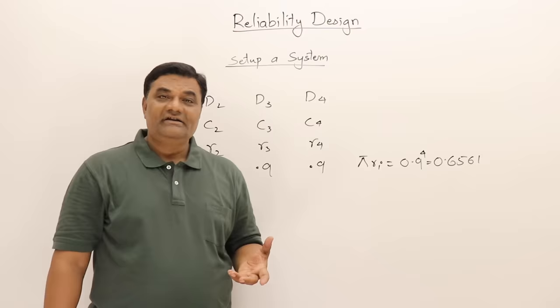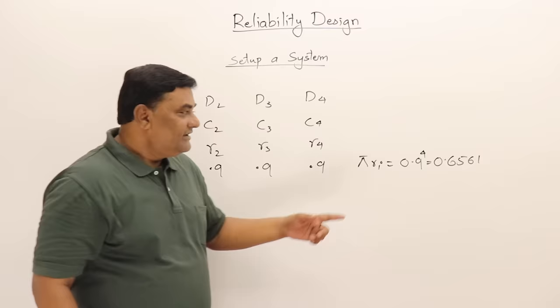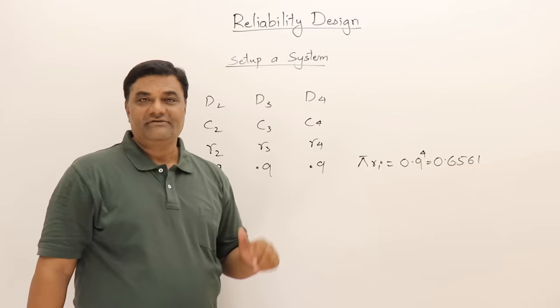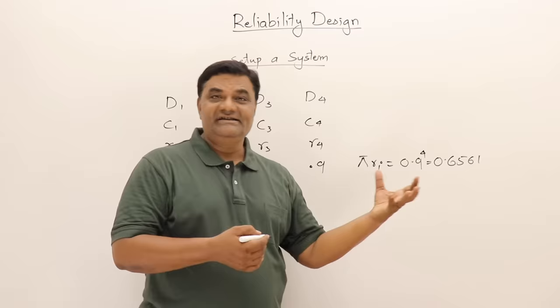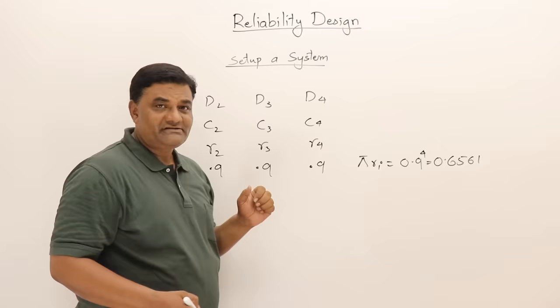There are about 35% chances of failure and 65% chances it works perfectly. So I have to improve my system. The problem is I want to set up a system such that reliability is maximum. What I should do is have more than one copy of markers, more than one camera, more than one set of lights.